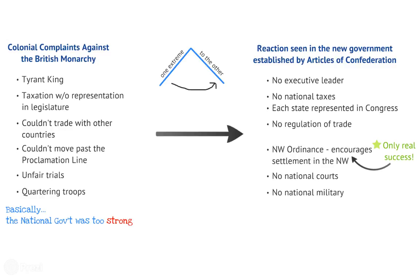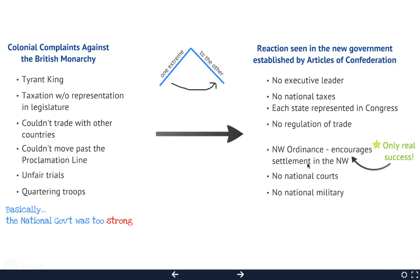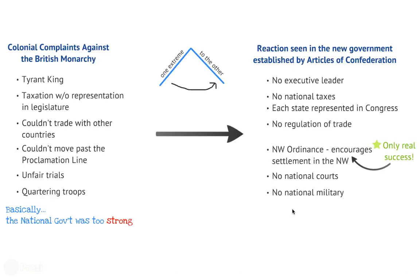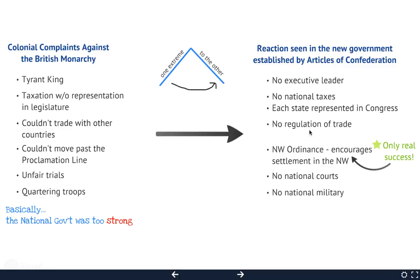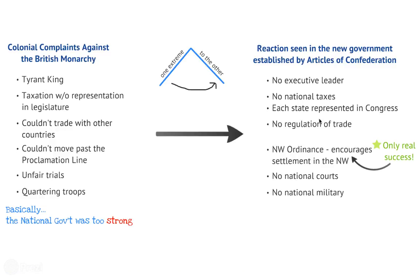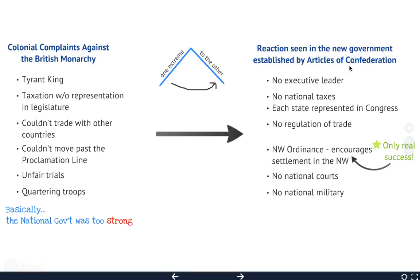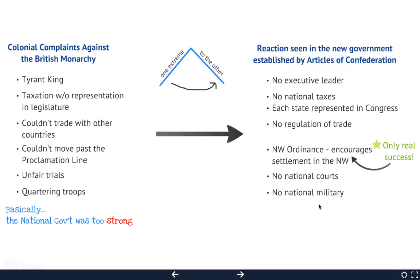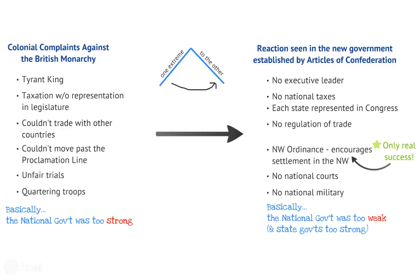Under the AOC, there was also no court system and no military. The Articles of Confederation said that Congress could declare war, except there was no military, no taxes, and no leader to lead the troops into battle. So the AOC said you can have war, but literally took away all the tools to do so.